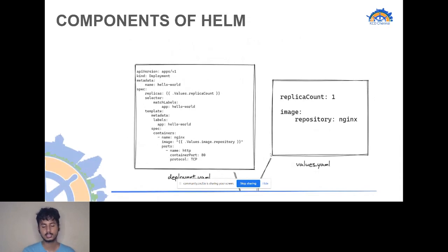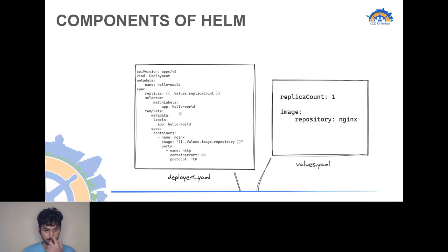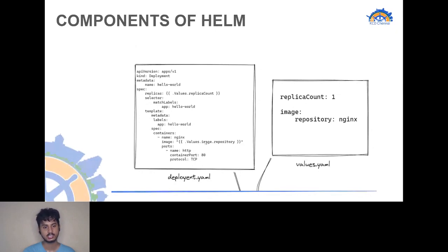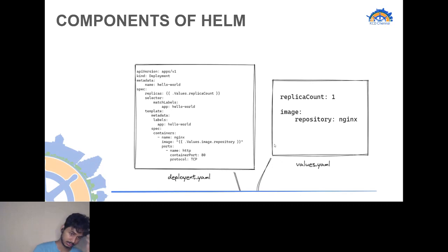There are two other important files: deployment.yaml and values.yaml. The deployment.yaml contains your regular Kubernetes objects — container name, image name, ports, and all those things. The values.yaml is what makes Helm powerful: you can change values there and they propagate into the deployment. For example, if you want to deploy an Nginx image, you can just change it in values.yaml instead of editing the deployment.yaml directly, which can be tedious.